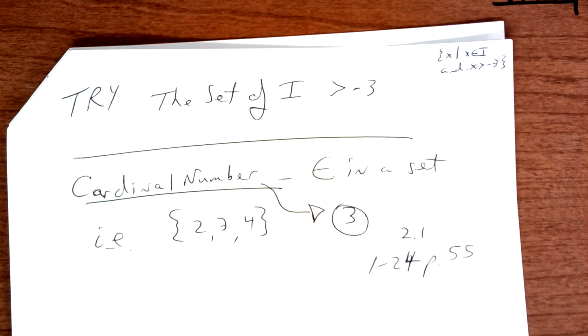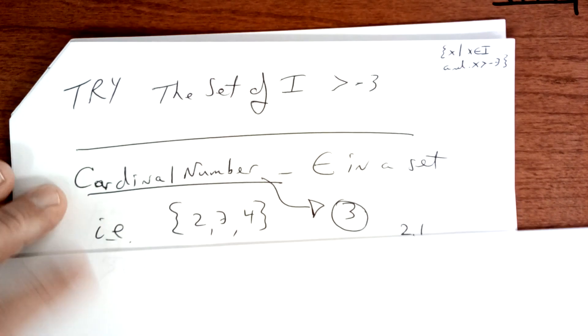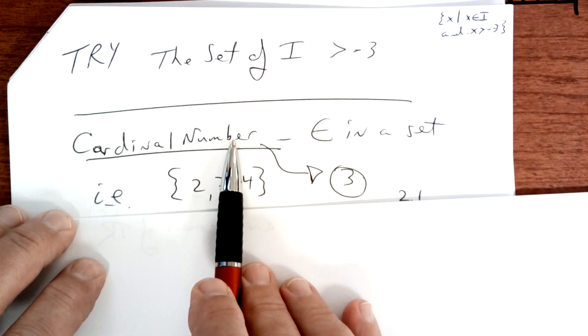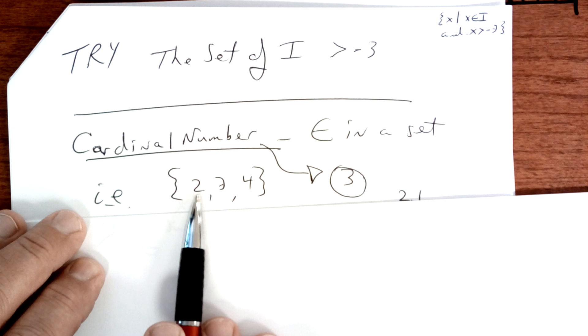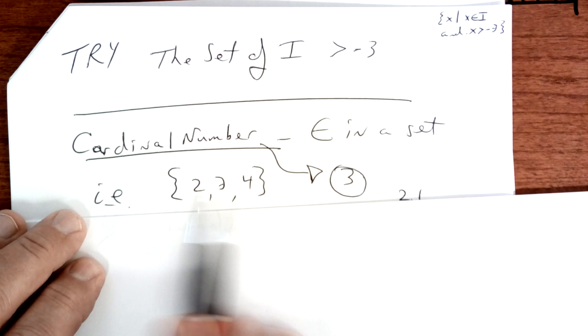Let's go on. There's something called a cardinal number. A cardinal number is just the number of elements in the set. So, one, two, three. There's only three elements in here. And that would be the important.